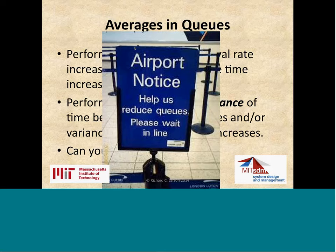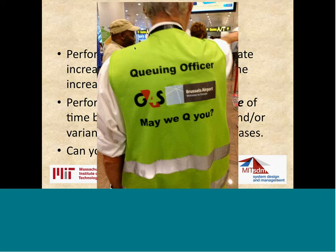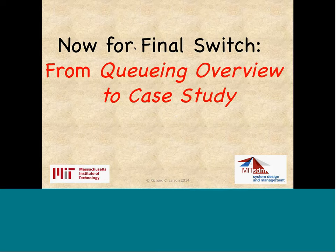Averages in queues: performance degrades as the arrival rate increases and/or the mean service time increases. Performance also degrades as the variance of inter-arrival times or service times increases. I don't know of any company, government organization, or university that doesn't have queues in some aspect of their services. It's good to know these simple back-of-the-envelope models before you dive into this ocean of data without that kind of a priori knowledge.